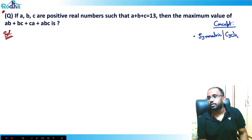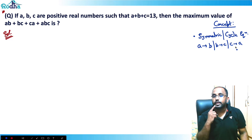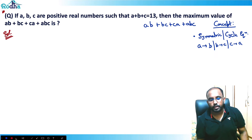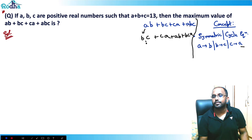Why is it called a symmetric or cyclic equation? Because in these equations, if I interchange the variables — for example, if I replace a with b, b with c, and c with a — then my equation will not change. If I do that substitution in ab plus bc plus ca plus abc, the equation remains the same. So this is called a symmetric or cyclic equation.